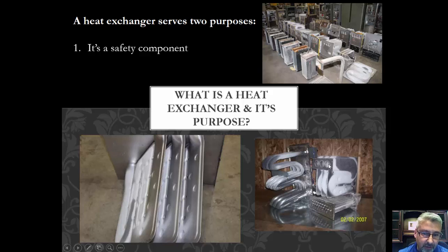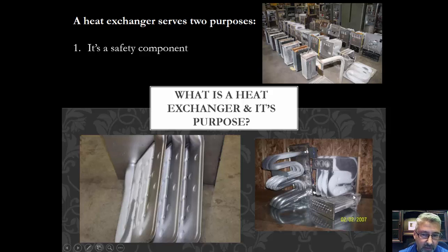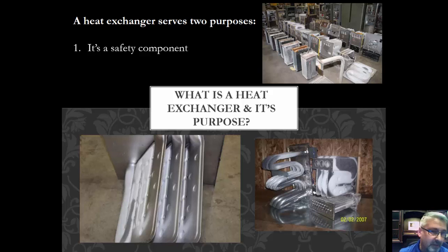The burners on this furnace would be right here — you'd have three in-shot burners. The heat and flue gas from those burners will travel through the serpentine heat exchanger, work its way into the coupler box, then go through the secondary. On the front would have been a collector box or front cover with a vent motor assembly. That flue gas produced from the fire must exit the building via chimney, B vent pipe, PVC schedule 40, or cell core, depending on what the furnace is rated for.